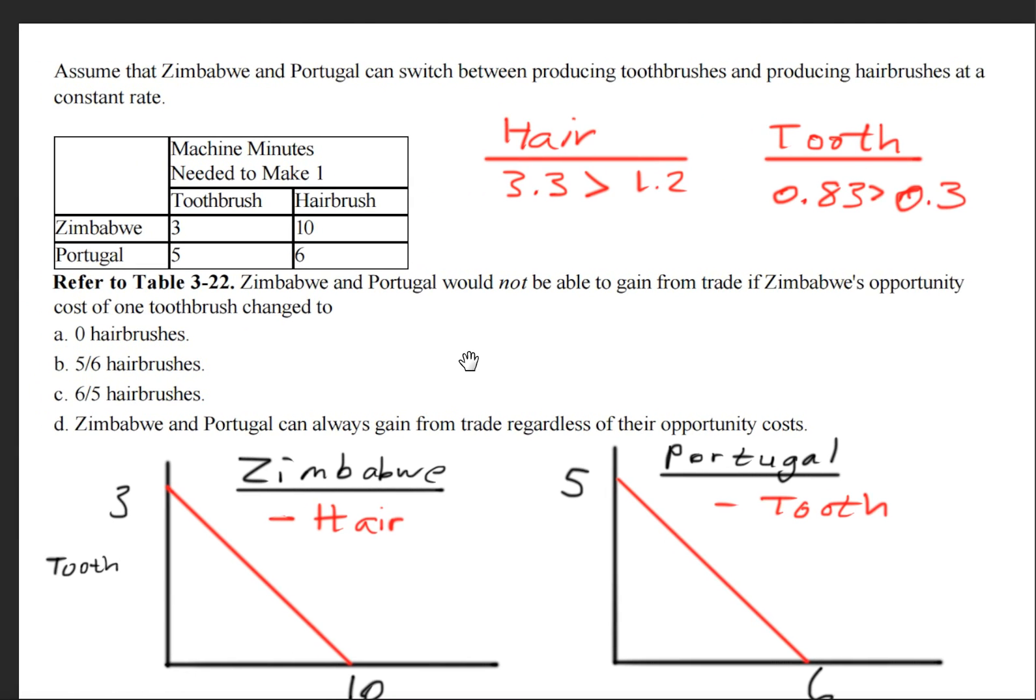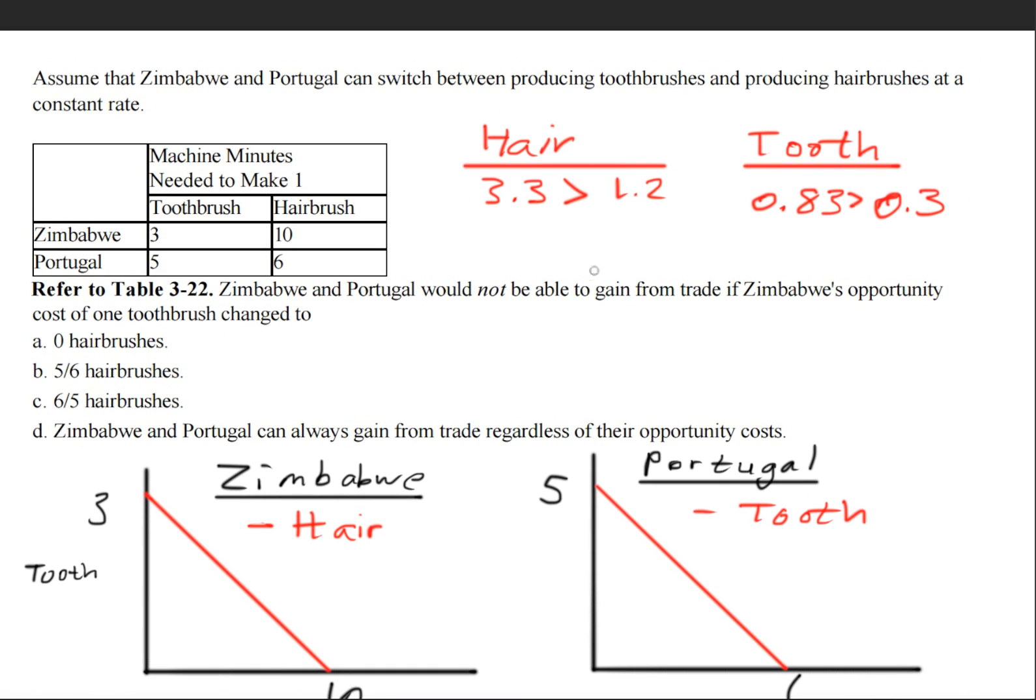Okay, so now if we take a look at our choices here. In order for these countries not to gain from trade, it has to be one of these values. It cannot equal this value, or this value, or this value, or this value. But it's asking about toothbrushes. So we can eliminate this right here. We don't have to worry about these numbers.